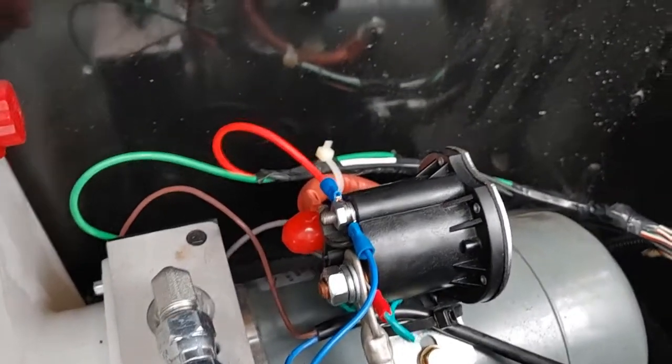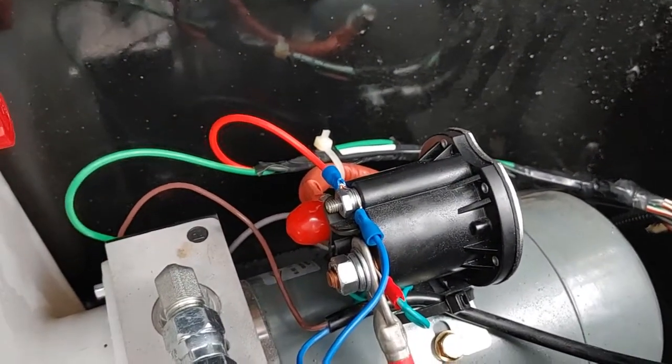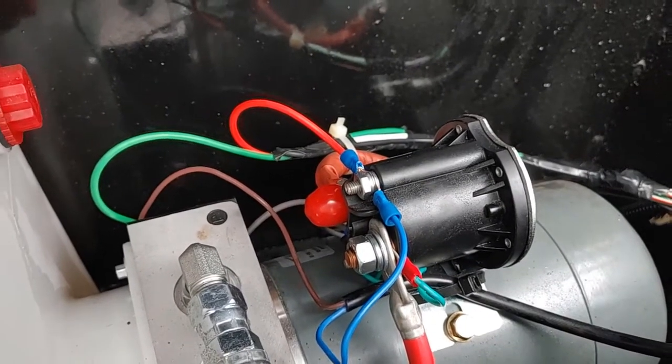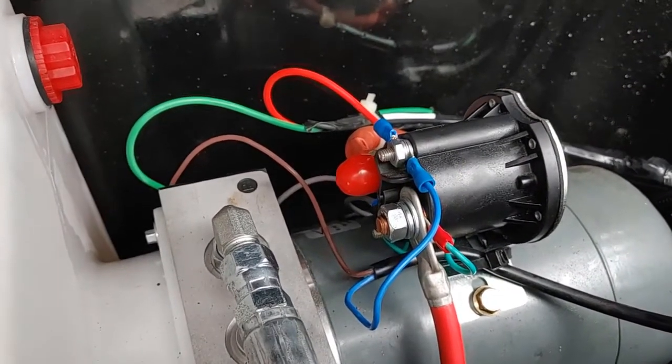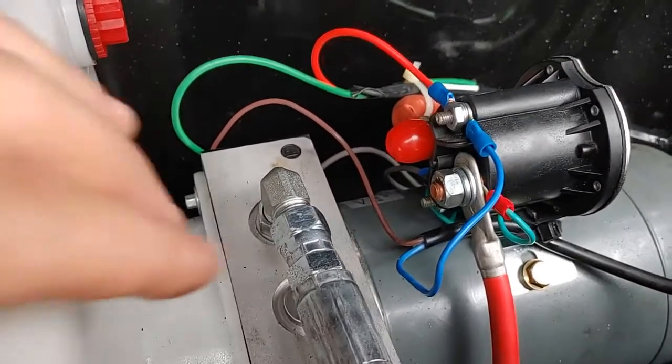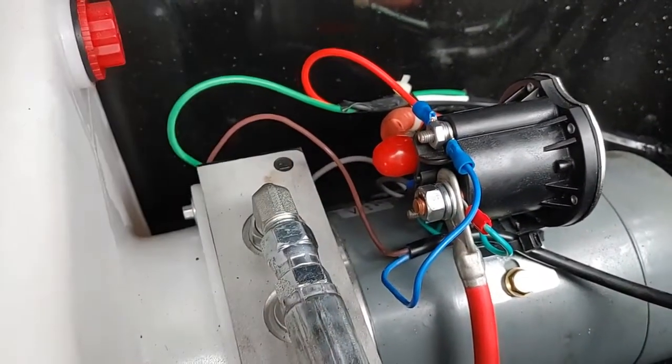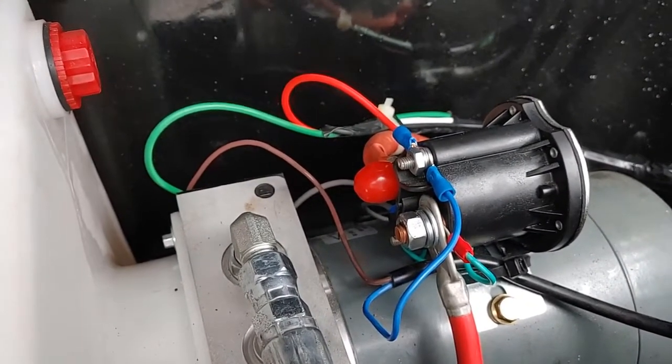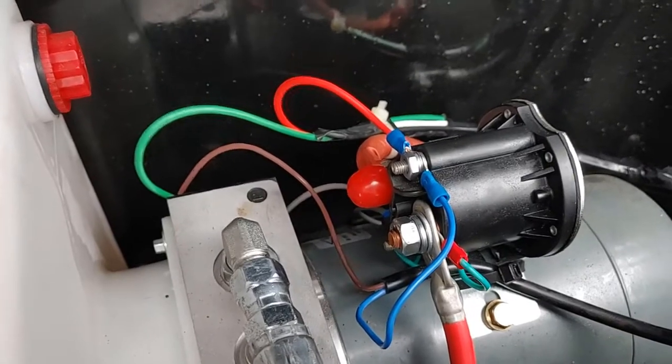And then all I needed was the red. It was the up function on the remote, and the white has power but it's not needed anywhere. I actually tried to hook the white up here, and what happened was it would try and go down but would immediately go up.